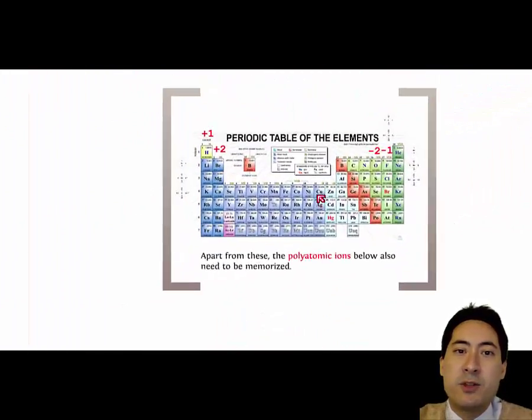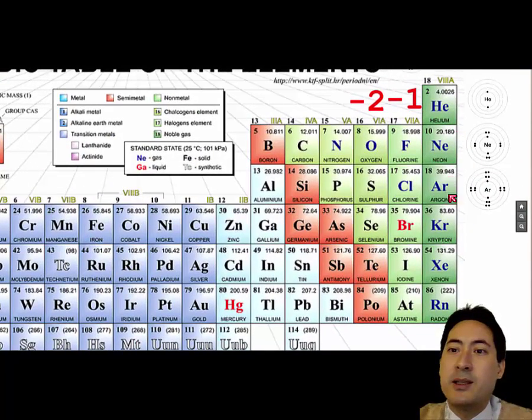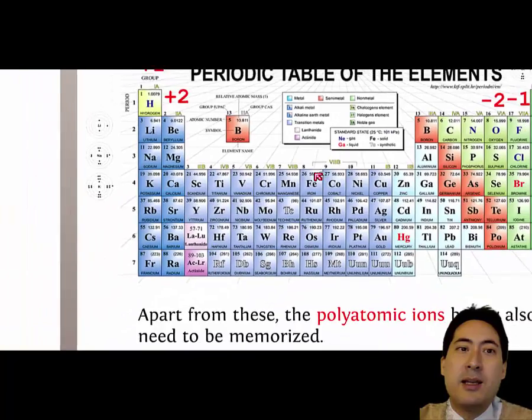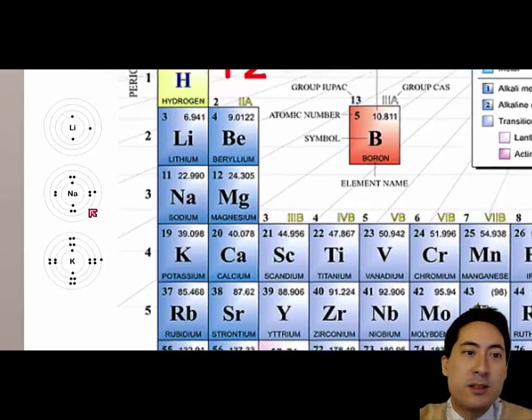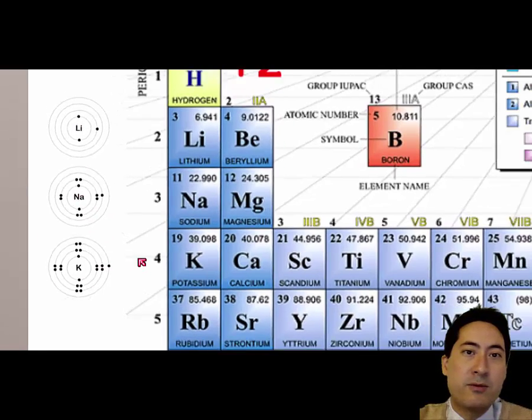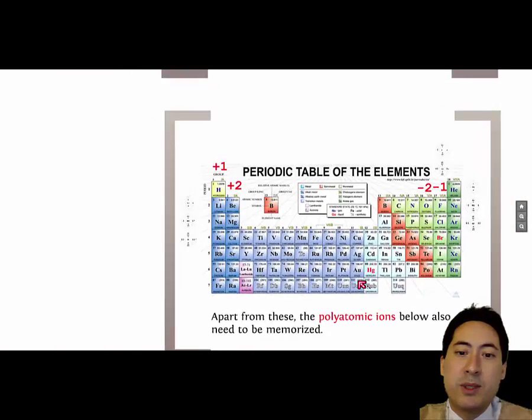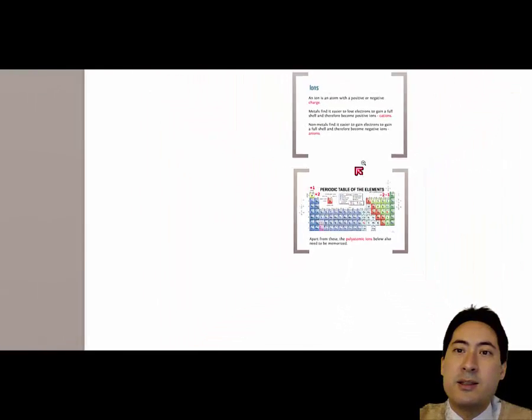In order to gain the full shell, the non-metals here will all gain electrons to have a full shell to become like helium, neon, argon, etc. And the metals here will all lose an electron. So sodium will lose an electron to have a full shell. Potassium will lose an electron to have a full shell. You can see the basic shells here is 2 8 8. We won't get any more complicated than that at this stage.